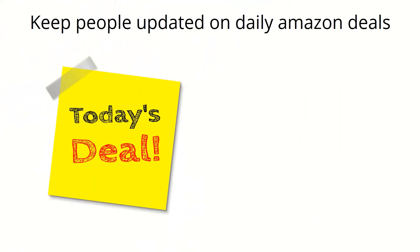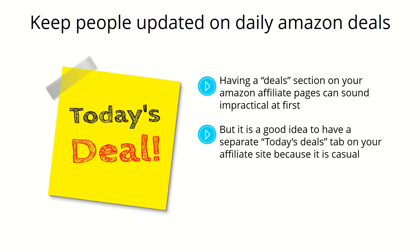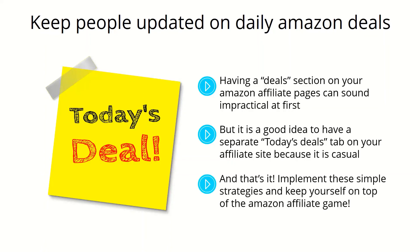Keep people updated on daily Amazon deals. Having a deal section on your Amazon affiliate pages can sound impractical at first because the deal section on the Amazon marketplace shows deals from every category at random, but it is a good idea to have a separate Today's Deals tab on your affiliate site because it's casual and people will love taking a look there just for curiosity's sake before leaving your site, which can easily lead to an impulse purchase. Implement these simple strategies and keep yourself on top of the Amazon affiliate game — thanks for watching.